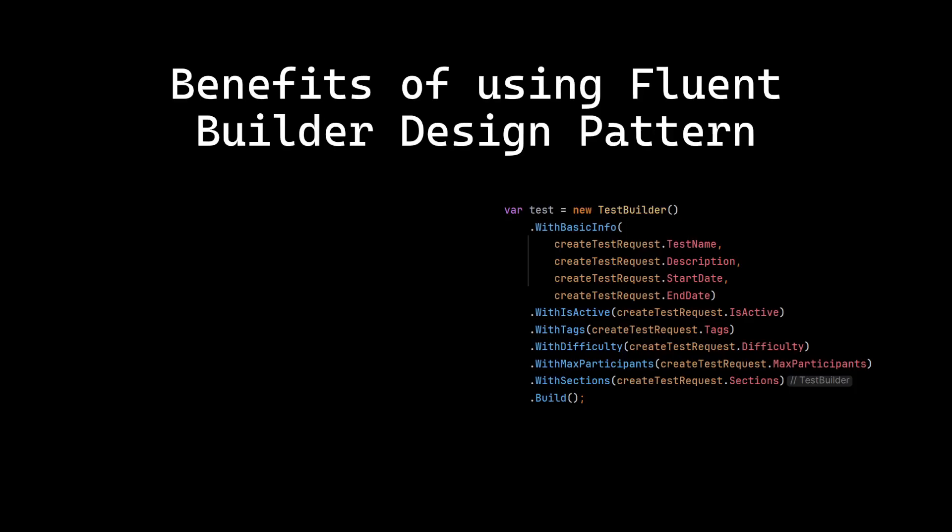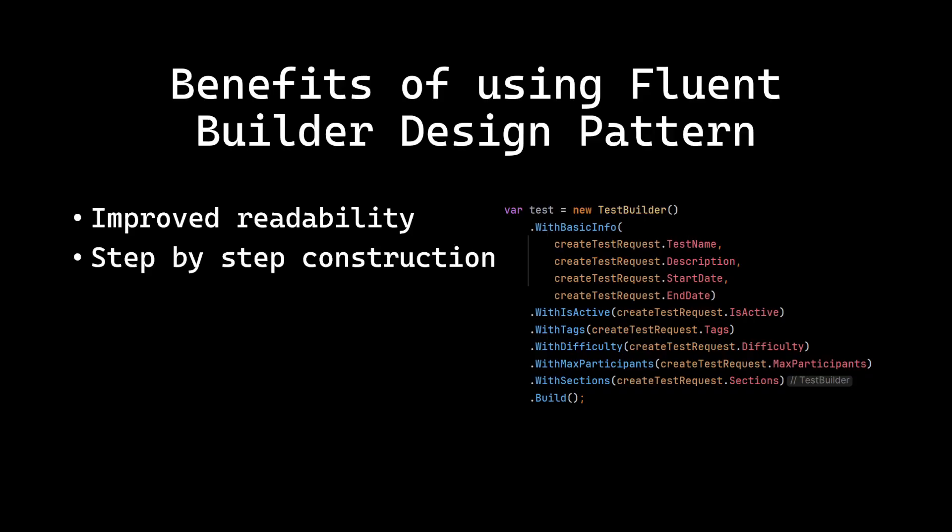What are the benefits of using the Fluent Builder pattern? First, improved readability — we have descriptive names for all of those methods that make the code self-documenting. Also, step-by-step construction, so you can build the object in logical steps, which is especially useful for complex objects.